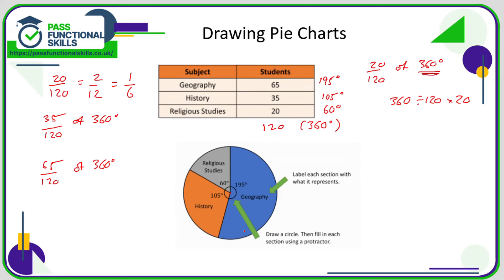And then you should either label each slice or do a color code. Maybe over here have a little code where gray is RE and blue is geography, orange is history.